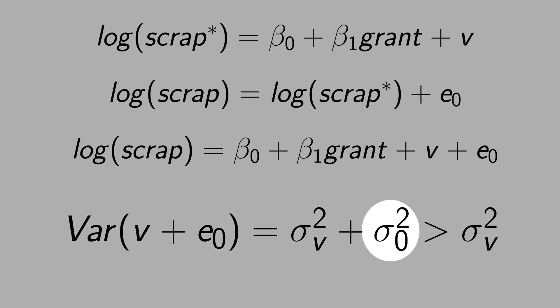And the variance is always a positive measure. Therefore, the variance of v plus this term is bigger than the variance of v. The consequence is that the standard errors will be bigger and you will be less likely to get results that are statistically significant.